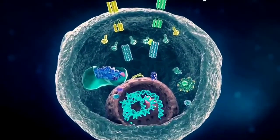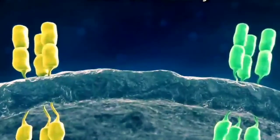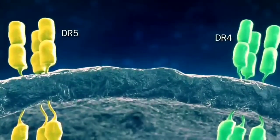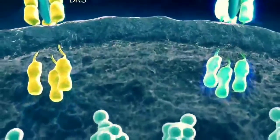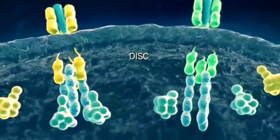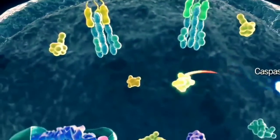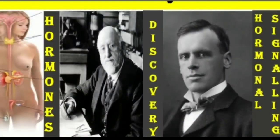A hormone delivers its message to the target cell by changing the shape of the receptor that binds it. The receptor's new shape sets up certain changes in the cell, such as alteration in permeability, enzyme activity, or gene transcription. This concludes our discussion of hormones, hormonal signaling, and their discovery. In the next video, we will discuss the chemical classification of hormones.